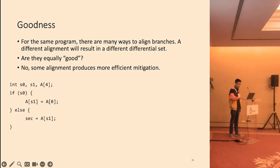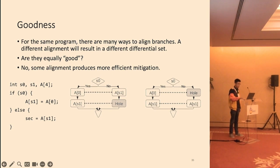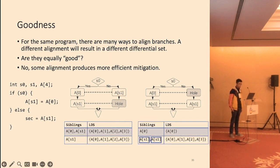Let's look at this example. The then branch has two memory accesses, whereas the else branch has just one. There are two ways of aligning branches. Each will produce a different local differential set. The alignment on the right aligns similar memory accesses, which results in an overall smaller mitigation overhead.